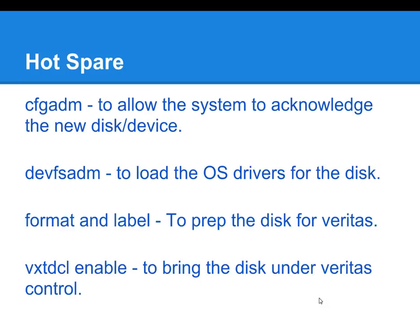You'll see the new devices and the new disks registered. Once all the new disks are registered, the next thing you want to do is load the software drivers for that disk. You can achieve that by running the devsadm command. There's no real output from that command, but basically it's going to load the drivers for you. The next step is to format and label the disk. After typing format, you will see a menu selection. You select the selection that corresponds to the disk in question, and then you proceed to label and exit that menu.